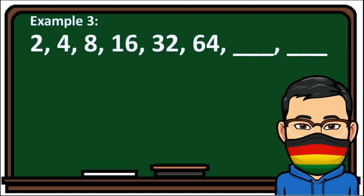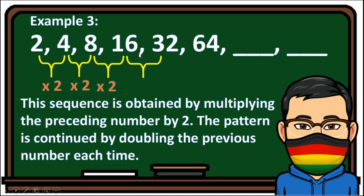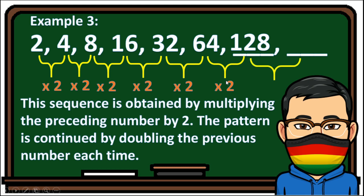Example 3. The given sequence is 2, 4, 8, 16, 32, and 64. Determine the next two numbers in the sequence. This sequence is obtained by multiplying the preceding number by 2. So: 2×2=4, 4×2=8, 8×2=16, 16×2=32, 32×2=64. The next term is 64×2=128, and then 128×2=256. So your answer is 128 and 256.